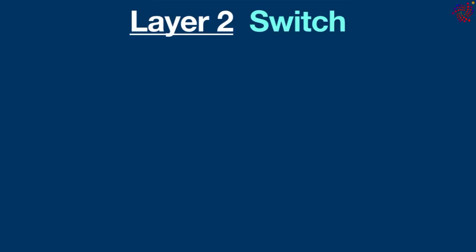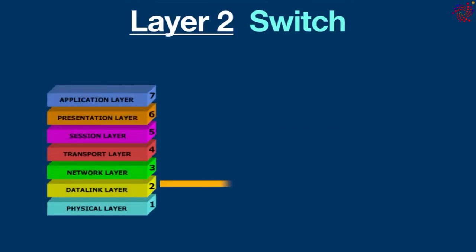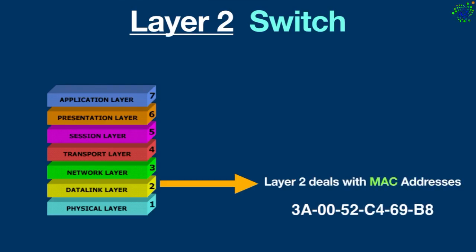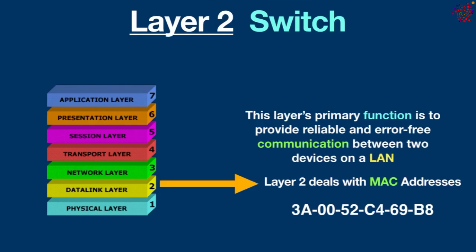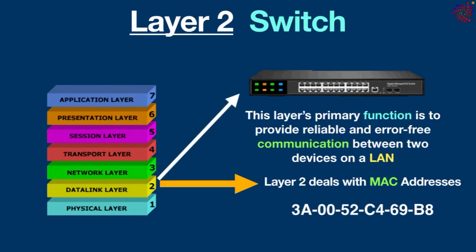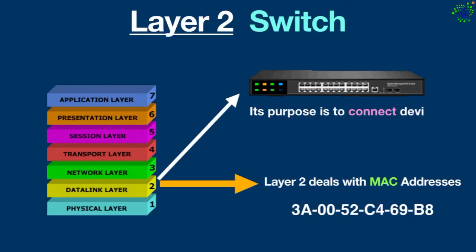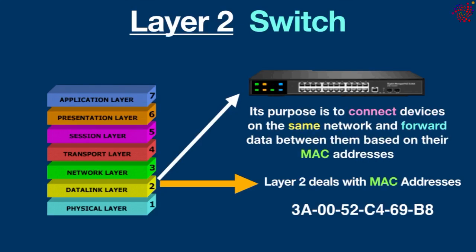Now let's talk about the layer 2 switch. Layer 2 is the second layer of the OSI model, which deals with MAC addresses. Its primary function is to provide reliable and error-free communication between two devices on a local area network. A layer 2 switch is a networking device operating at the OSI model's data link layer — its purpose is to connect devices on the same network and forward data between them based on their MAC addresses, reducing broadcast traffic and providing dedicated bandwidth to hosts.